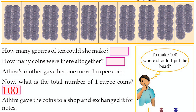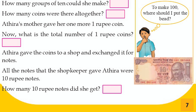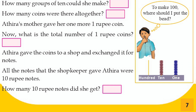Adira gave the coins to a shop and exchanged them for notes. All the notes that the shopkeeper gave Adira were 10 rupee notes. How many 10 rupee notes did she get? She got 10 notes of 10 rupees, which equals 100 rupees.